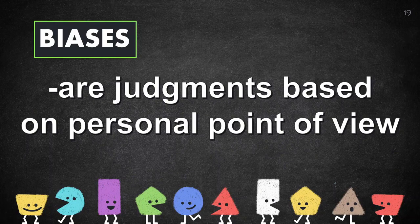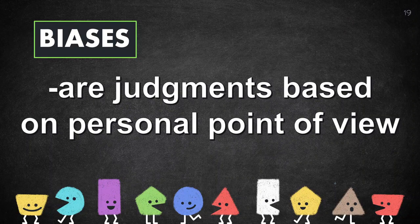Biases are judgments based on personal point of view. When we say biases, we judge something based on our personal point of view and not based on the facts presented to us. It is our personal choice — if I believe something, I believe it through bias, using my judgment based on my personal point of view.